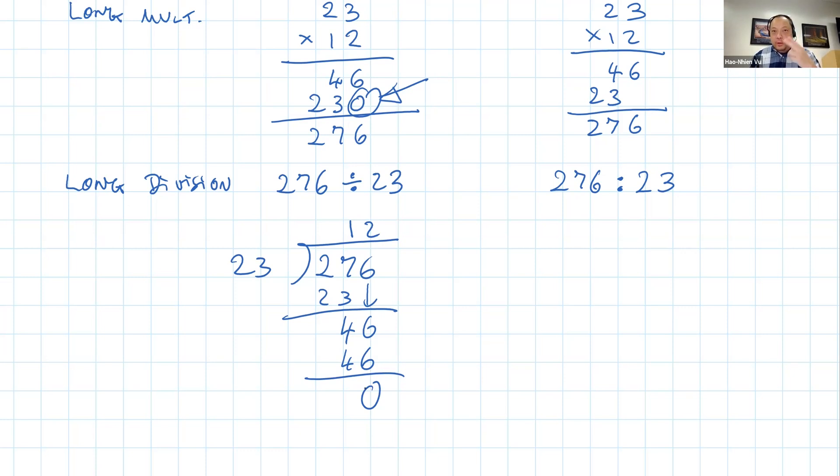Two things are different with the Vietnamese way. First of all, they set up the division differently. Instead of 276 on the right side and 23 on the left, it's 276 on the left and 23 on the right. And instead of having the quotient on top, they have the quotient on the bottom.